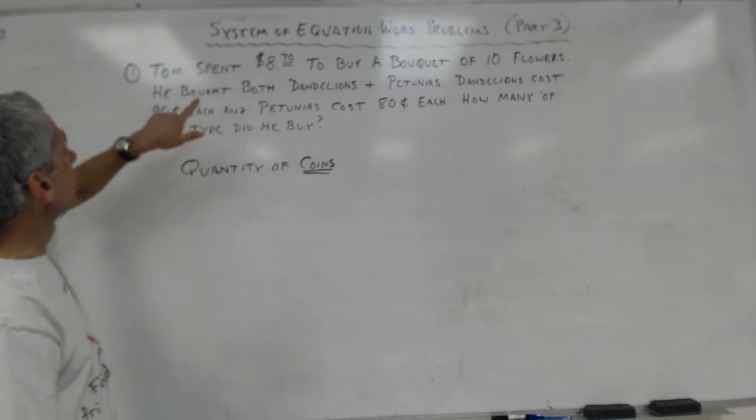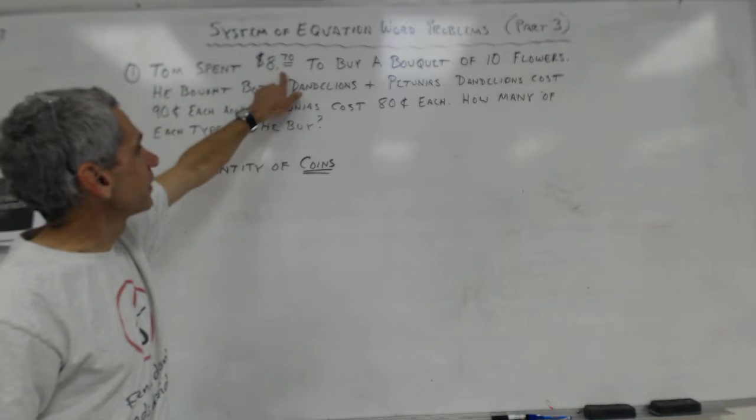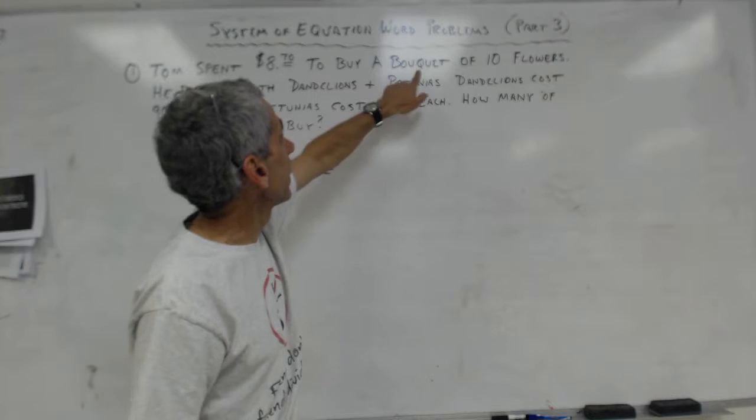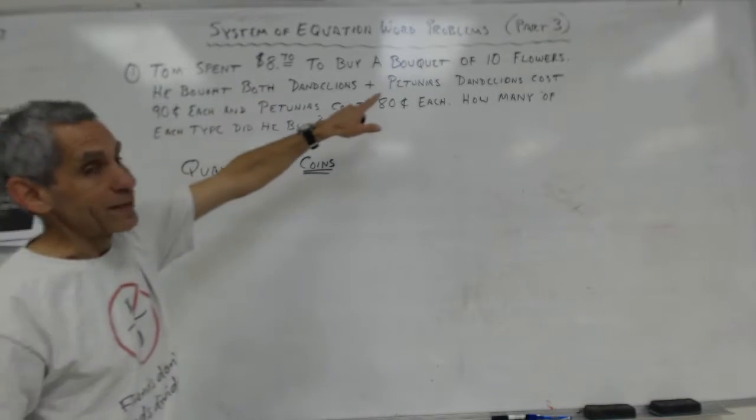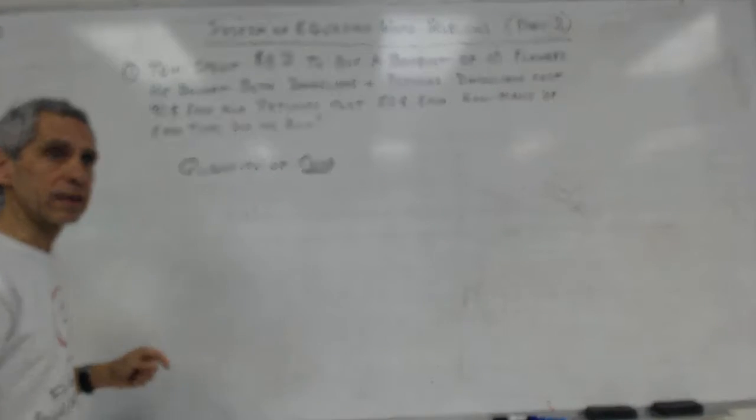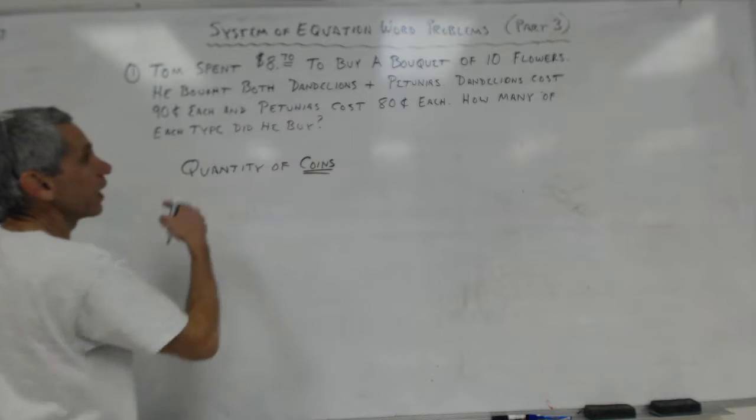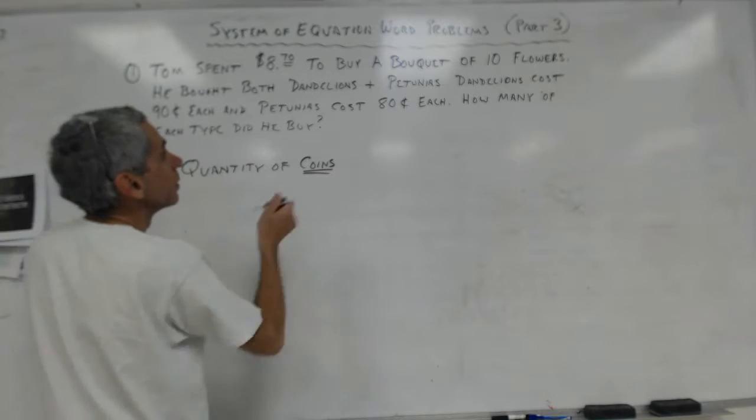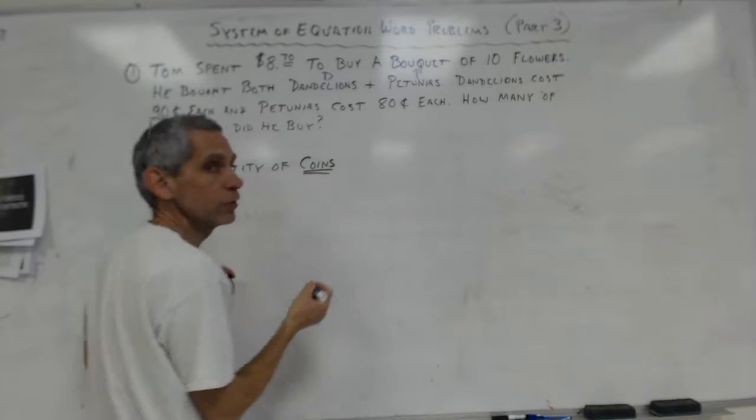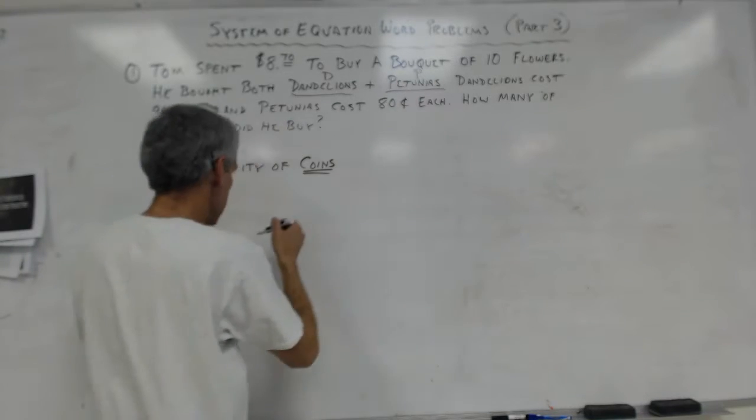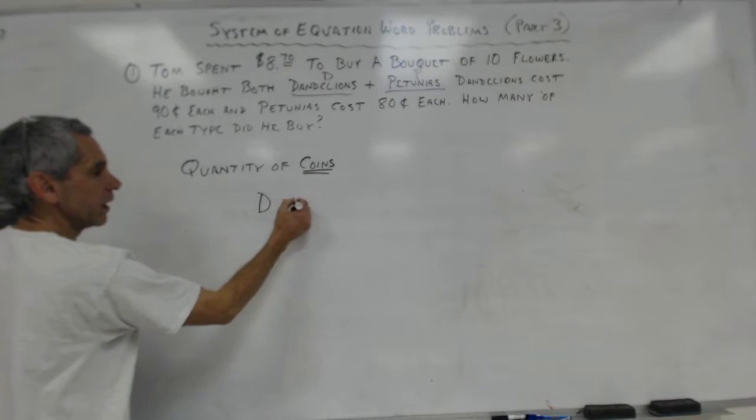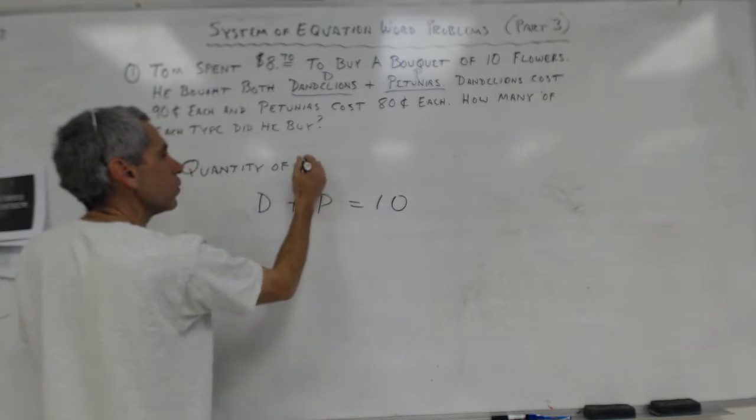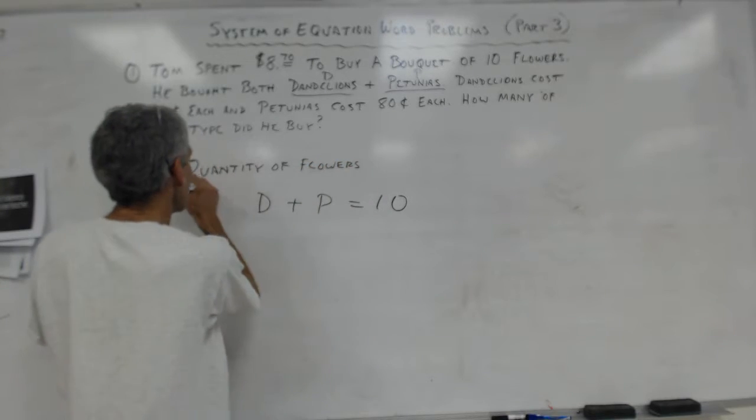Tom spent eight dollars and seventy cents to buy a bouquet of ten flowers. He bought both dandelions and petunias, so I'm going to make dandelions D and the number of petunias are going to be P. And so immediately I write D plus P is equal to ten, that's my quantity, no longer of coins, my quantity of flowers. So it's really pretty straightforward.